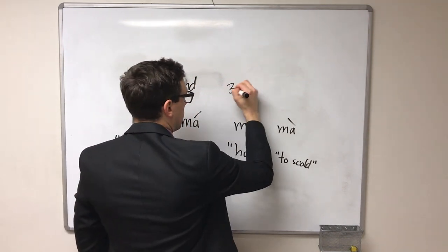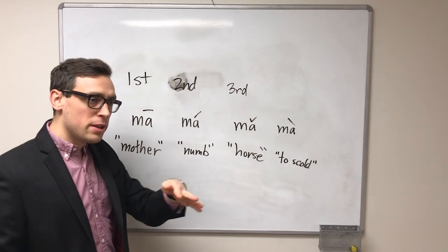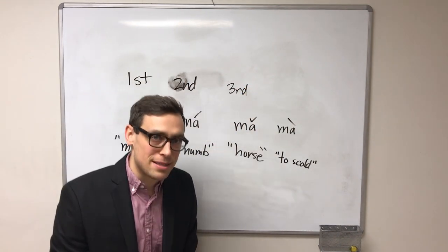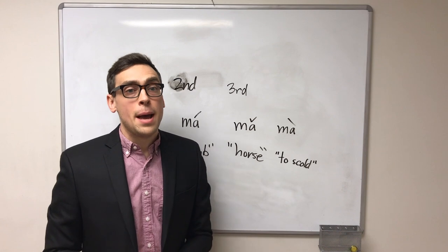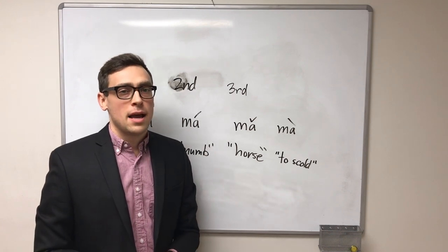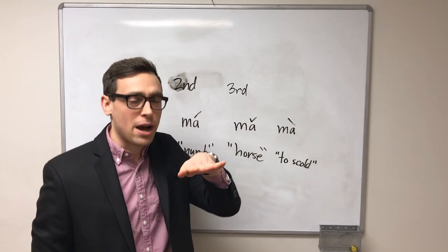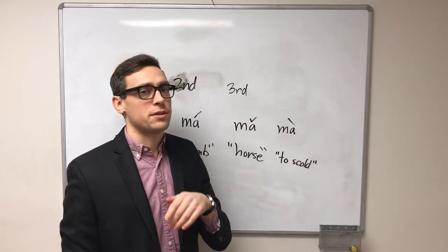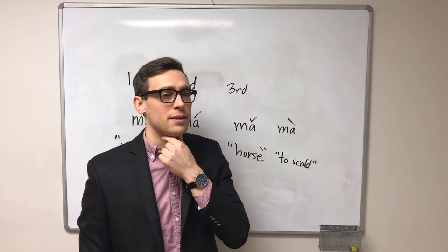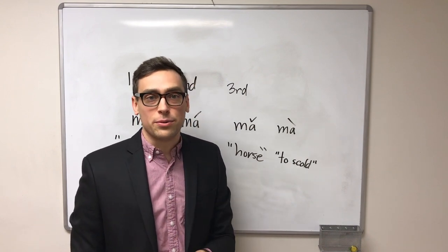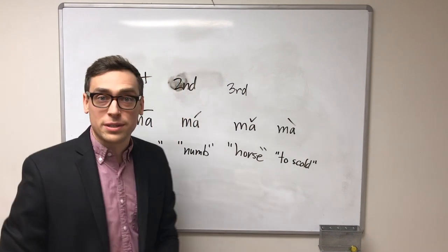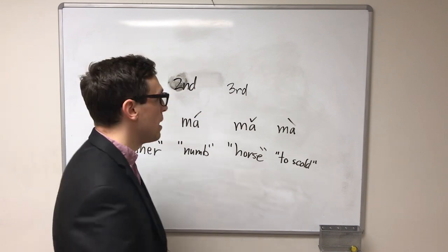The third tone starts relatively low in our register, dips down and then comes back up again. Ma, ma. If you can kind of feel your voice bottoming out as you hit the bottom of your register, kind of crackling a little bit, that's a good way to know you're producing a good third tone as you begin. Ma, ma.